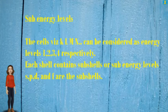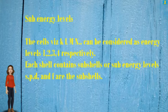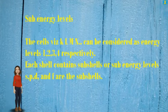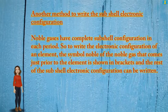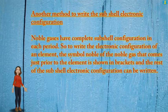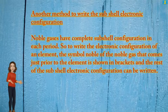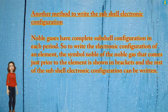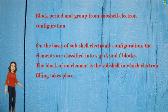Sub-energy levels: the shells K, L, M, N can be considered as energy levels 1, 2, 3, 4 respectively. Each shell contains sub-shells or sub-energy levels: S, P, D, and F. Another method to write the subshell electronic configuration uses noble gases. Noble gases have complete subshell configuration, so the symbol of the noble gas that comes just prior to the element is shown in brackets, and the rest of the subshell electronic configuration is written after.